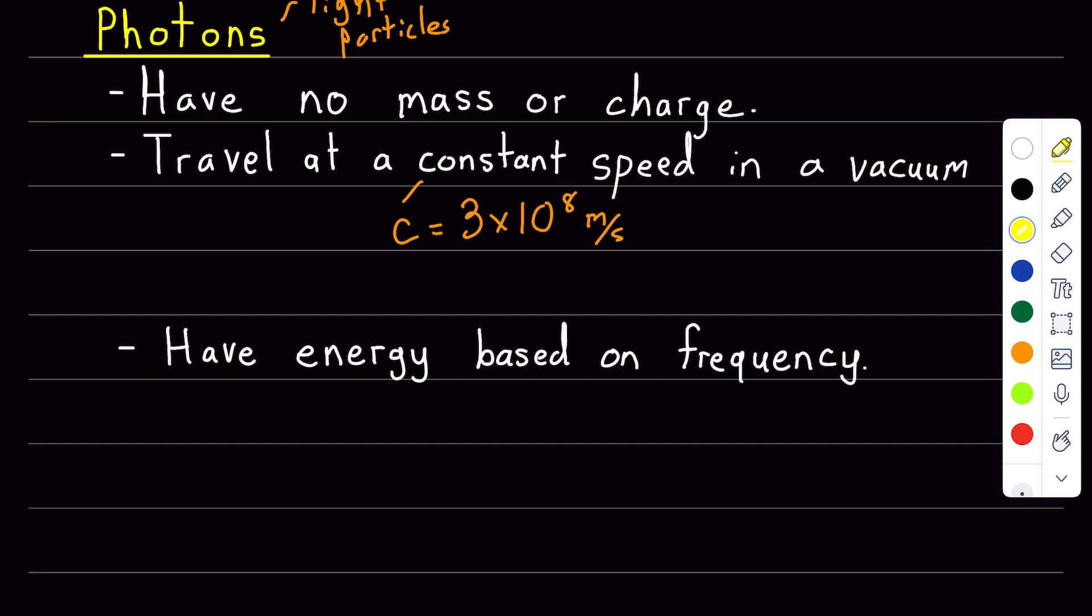Because a photon is also a wave, it does have a wavelength. And that wavelength is inversely proportional to frequency. So from waves, the speed of a wave equals the frequency of a wave times the wavelength of a wave.